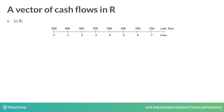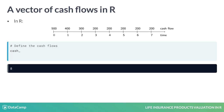Here's an example of a sequence of cash flows. This vector has eight entries. The first one corresponds to time zero and the last one to time seven. You create this vector in R with entries 500, 400, 300, and then repeat 200 five times using the rep function.